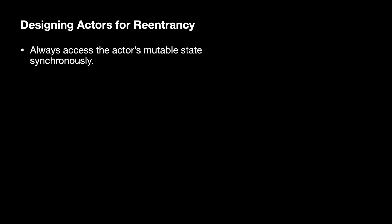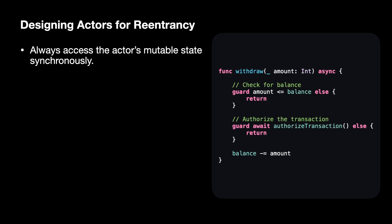So how can we design actors to handle reentrancy effectively? One approach is to always access mutable state synchronously — no reading or writing across a suspension point. For our bank account example, what we can do is authorize the transaction before checking the balance, to ensure synchronous access to the mutable state, which is the balance.